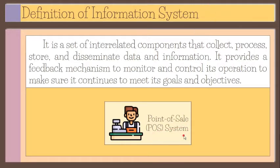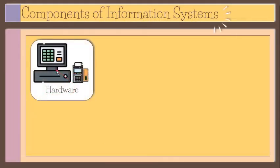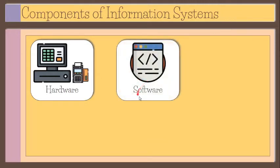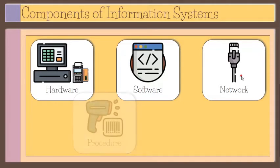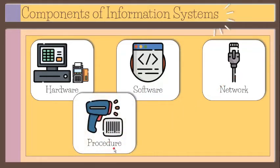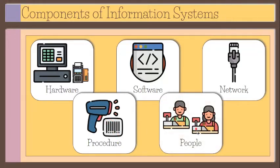Another example is a point-of-sale system — the place where customers make a payment for products or services at a store. This system is composed of the following components: Hardware, which is the computer equipment used to perform input, processing, storage, and output activities. Software, which consists of computer programs that govern the operation of a computing device. Network, which connects computers and equipment in a location to enable electronic communication. Procedure, which defines the steps to follow to achieve a specific end result, such as entering a customer order. And People, which includes all the people who manage, run, program, and maintain the system.